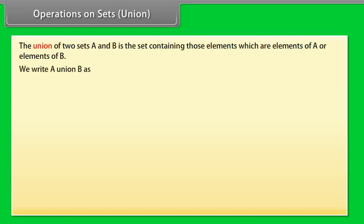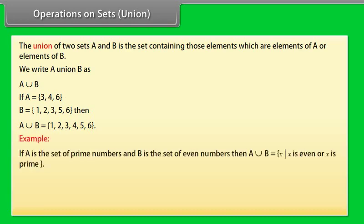A union B can be written this way. If A is equal to 3, 4, 6 and B is equal to 1, 2, 3, 5, 6, then A union B is equal to 1, 2, 3, 4, 5, 6.